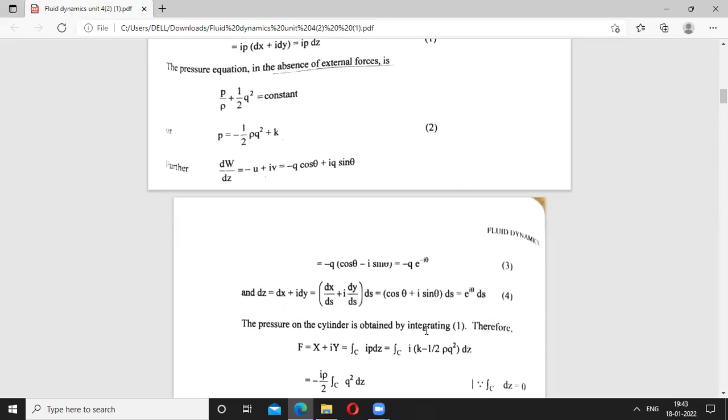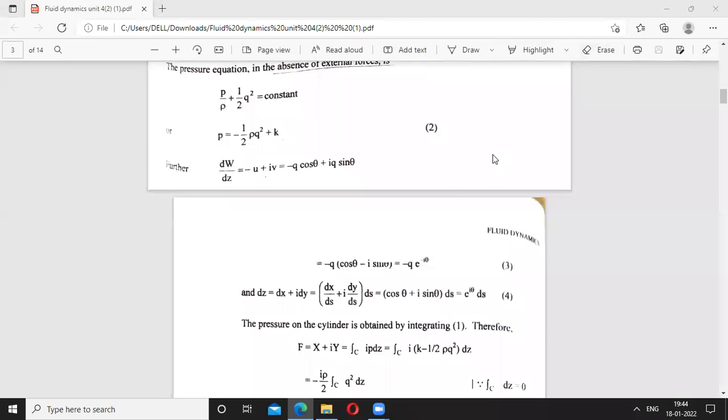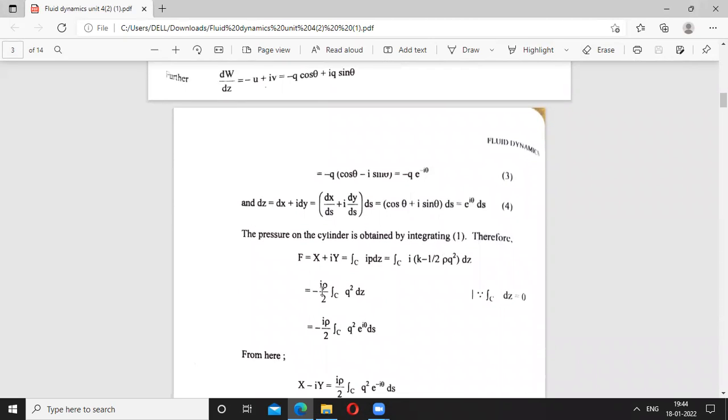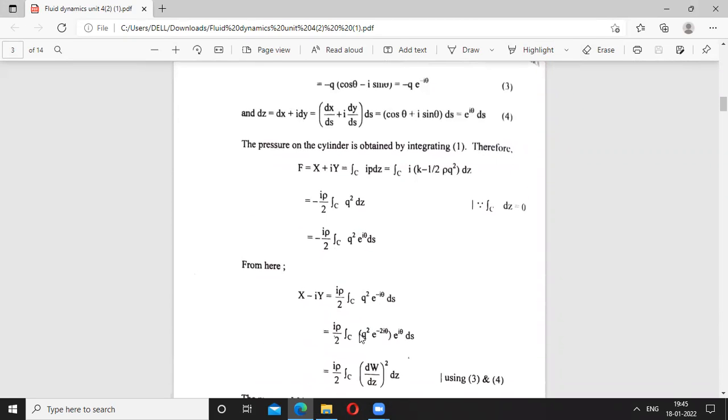Now pressure on the cylinder is obtained by integrating equation 1. If we integrate F, X plus iota Y equals integrating iota P DZ. Just we put value which equals minus iota rho by 2 integration over C, Q squared DZ. So you can write E raised to power iota theta.